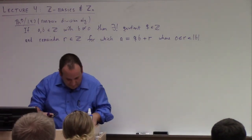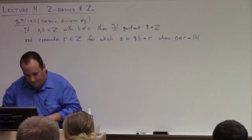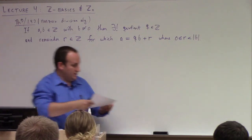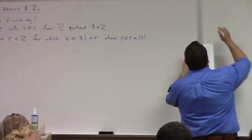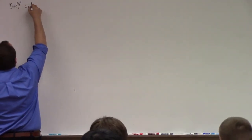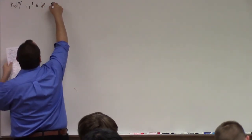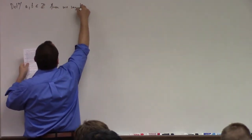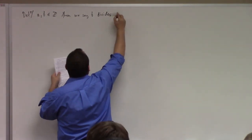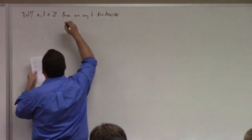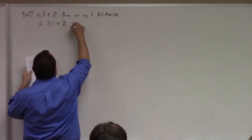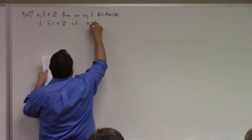This is just a result that guides our thinking, so we need a little bit of terminology to go further. Some definitions. Definition: if a and b are integers, then we say b divides a if there exists c in the integers such that a is equal to b times c.